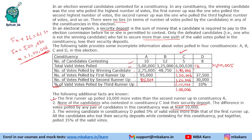The third additional fact states that the winning candidate in constituency D polled 5% of valid votes more than the first runner-up. Also, all the candidates who lost their security deposit while contesting for constituency D together polled 35% of the valid votes. Let us use this information to find the total number of votes and the votes for the first candidate.